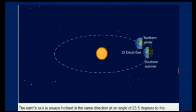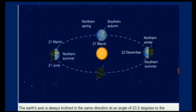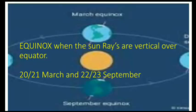Now showing the positions of different seasons as the Earth revolves around the Sun. Equinox occurs when the sun rays are vertical over the equator — either on 20th or 21st March, and 22nd or 23rd September. The variation in dates is because of the leap year: in a leap year there are 29 days in February, which causes a slight shift in the dates.